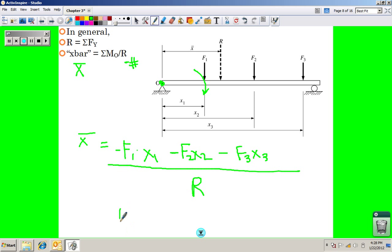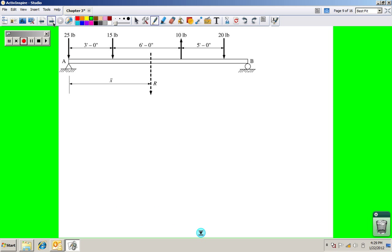Because R is really negative F1 plus negative F2 plus negative F3. So you're going to have a negative number on top divided by a negative number on bottom.